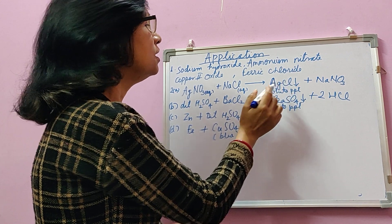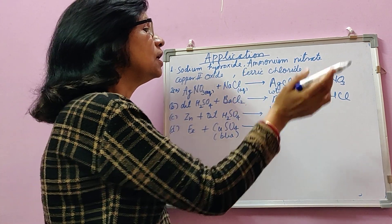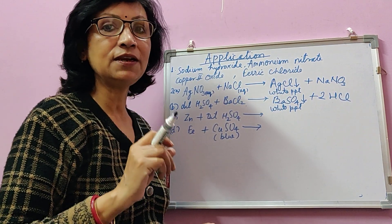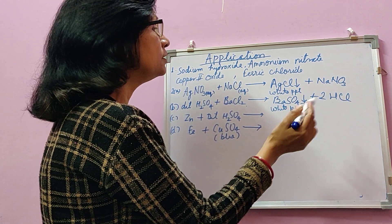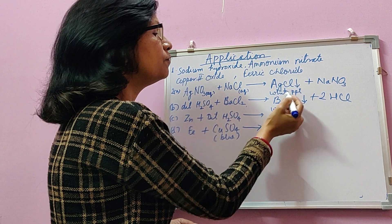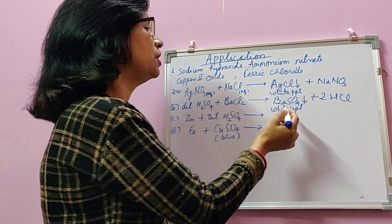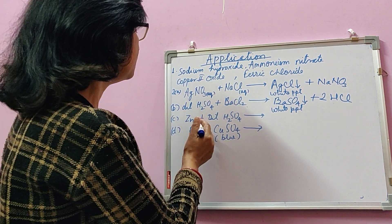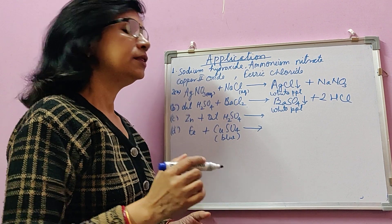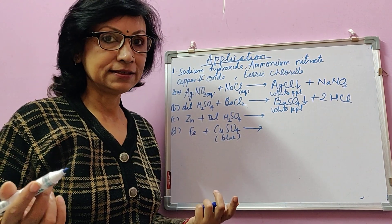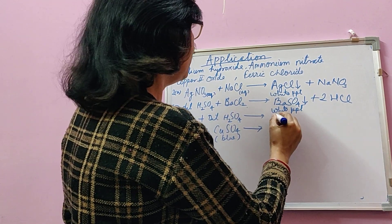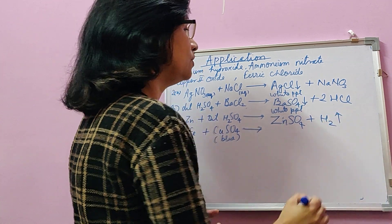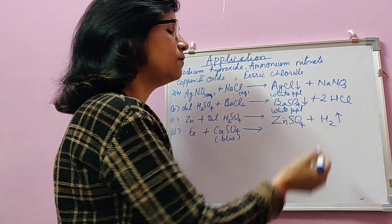You have to write the reactants and products in equation form, along with any details about the products. You can write a statement first — for example, when silver nitrate and sodium chloride solutions are mixed, they form a white precipitate of silver chloride — and then write the chemical equation. Alternatively, you can include the precipitate sign and color directly in the equation itself, which is also acceptable. Similarly, for zinc dropped in dilute H₂SO₄, you observe evolution of gas. It will be Zn + H₂SO₄ → ZnSO₄ + H₂. Mark the upward arrow for hydrogen gas.